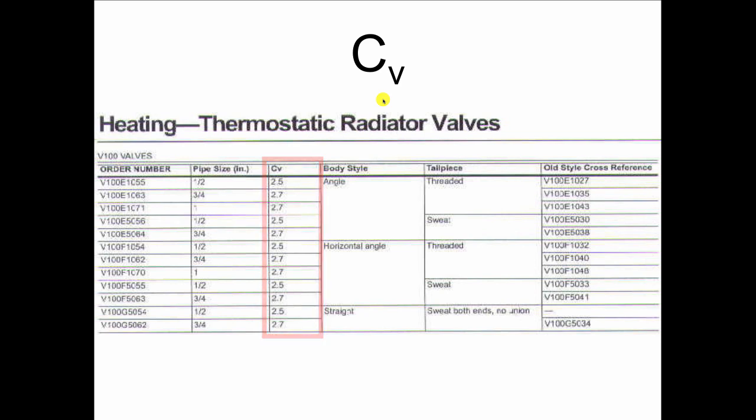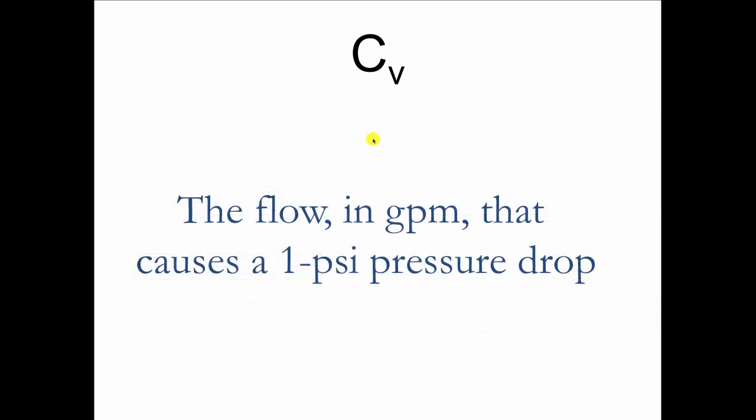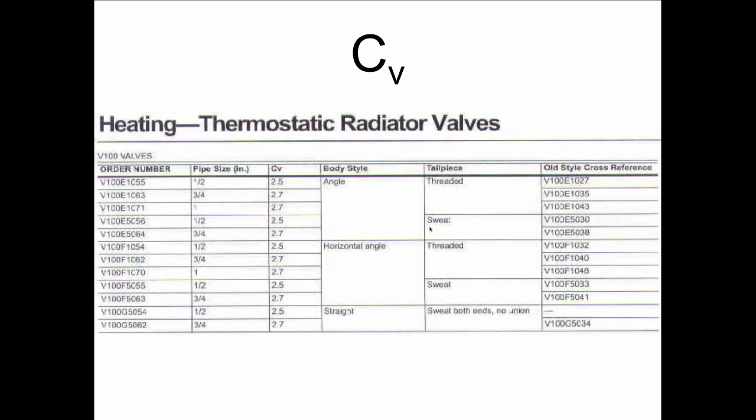CV is an engineering term and CV is always read as a number. And what it is is the amount of water in GPM, the flow of water in GPM that causes a one pound pressure drop across that valve. The CV you'll see pop up in a lot of things. It's given for packaged equipment. It's given for all kinds of valving. And once we know the pressure drop at one PSI we can figure out the pressure drop at any flow rate or the flow rate at any pressure drop.